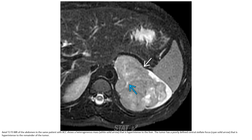This is a T2 fat-saturated MRI of the abdomen in the same patient with adrenocortical carcinoma, showing a heterogeneous mass that is hyperintense to the liver. The tumor has a poorly defined central stellate focus that is hyperintense to the remainder of the tumor.